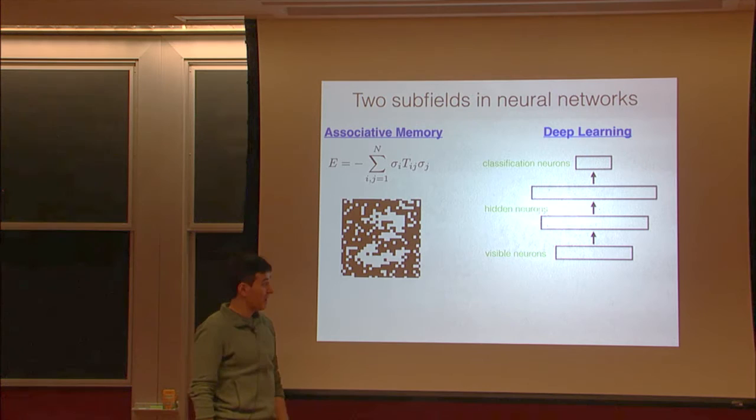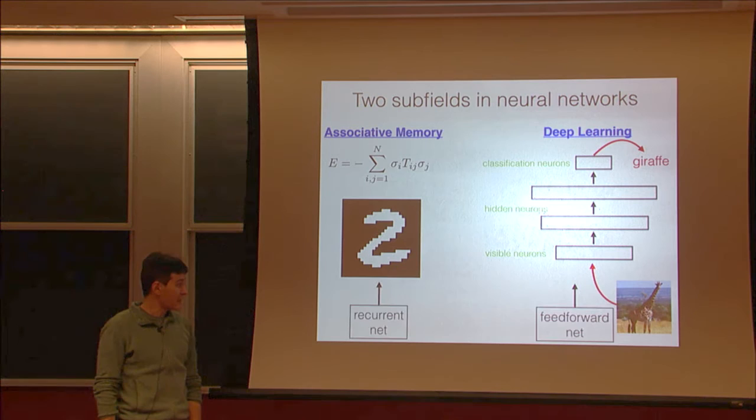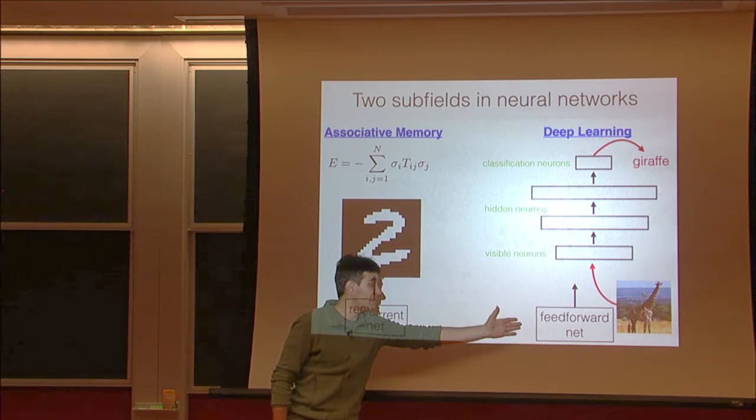In deep learning, people often study feed-forward neural nets, which are typically used for classification. These two computational frameworks are designed for solving very different tasks. Another difference is that associative memory is a recurrent net, and neural nets used for classification are typically feed-forward.